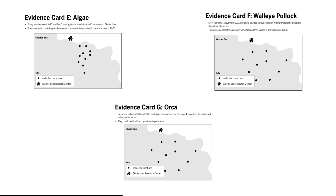You can find a copy of these evidence cards in the drive folder for the lesson posted to classroom. The samples described on evidence cards F and G were both collected at the same 10 different locations spread throughout the Glacier Sea. Both cards do a good job of representing the whole population.